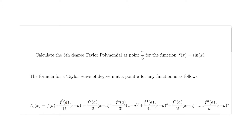The first derivative at π/6 divided by 1 factorial, times (x − π/6) to the power of 1. The second term is the second derivative at π/6 over 2 factorial, times (x − π/6) squared. The third term has the third derivative at π/6 over 3 factorial — which is 1×2×3 — times (x − π/6) cubed. You can see the pattern forming: the factorial and the power match. Fourth derivative over 4 factorial to the power of 4, fifth derivative over 5 factorial to the power of 5. Now we're going to differentiate sine of x five times and calculate each derivative's value at π/6.